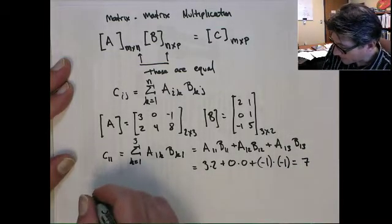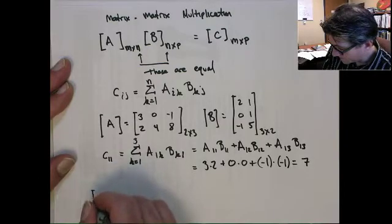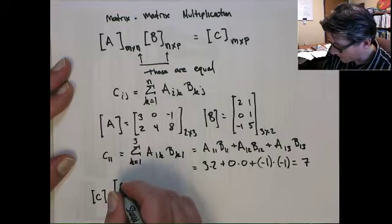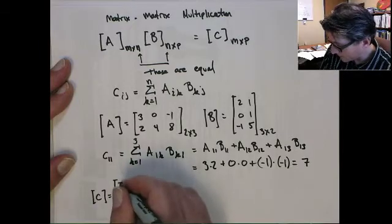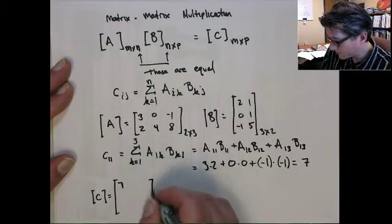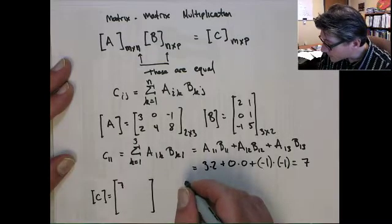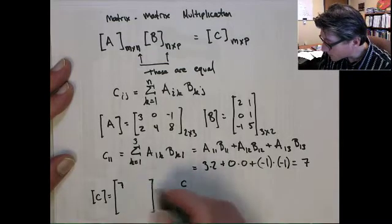So, the first value in c would go here, this is c11, it has a value of 7. Likewise, we can look at this one, which would be c12.